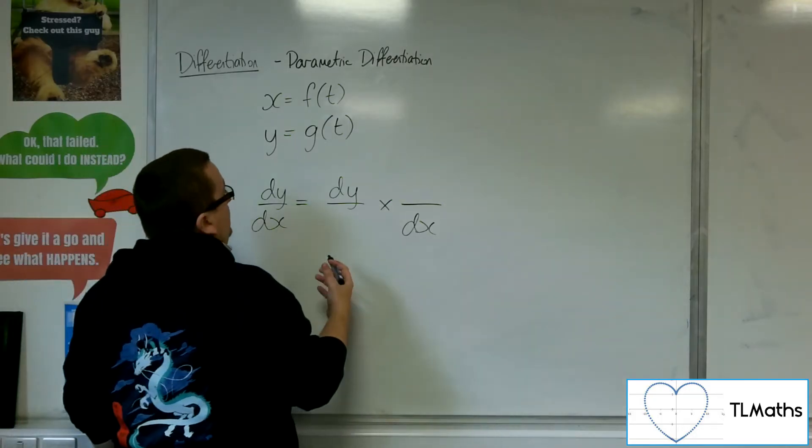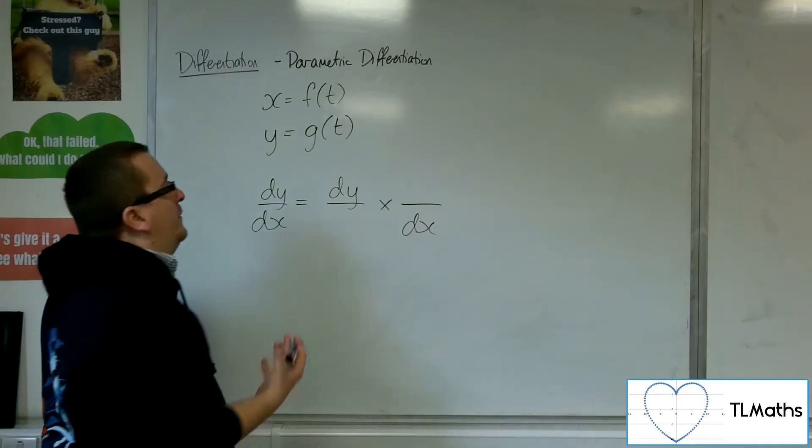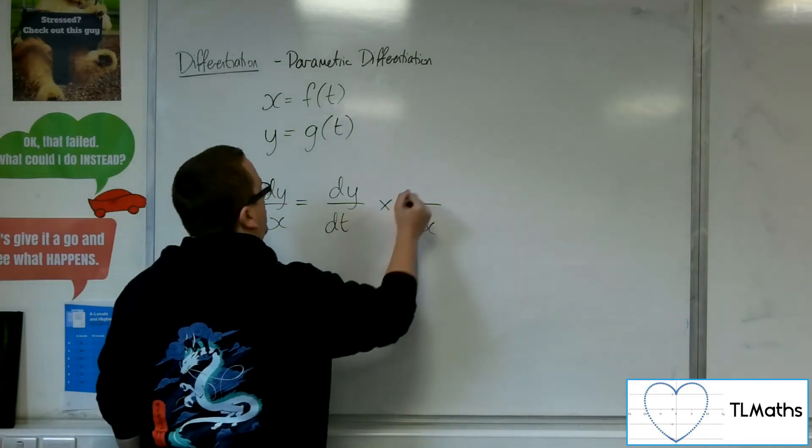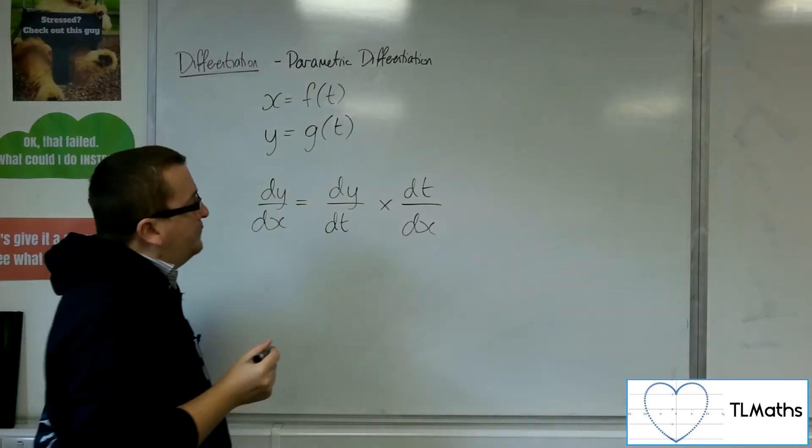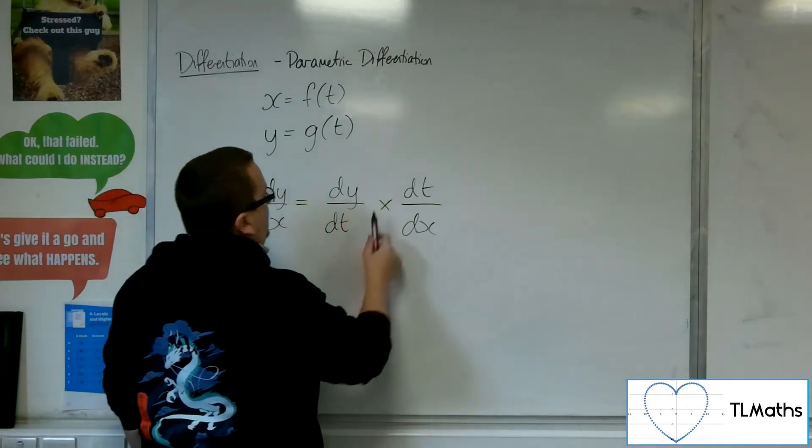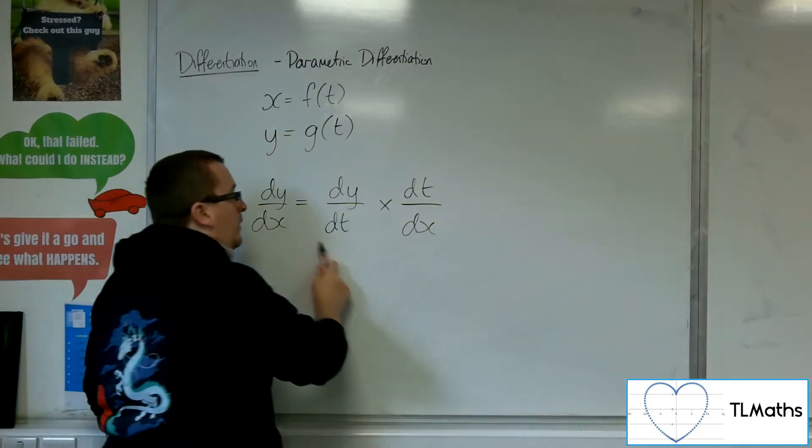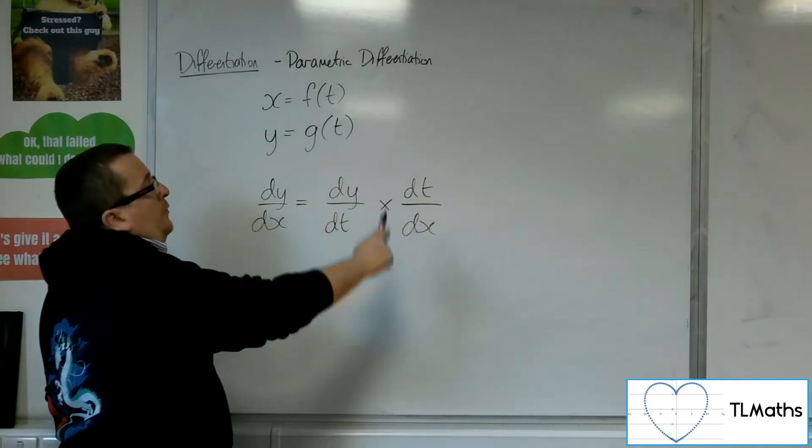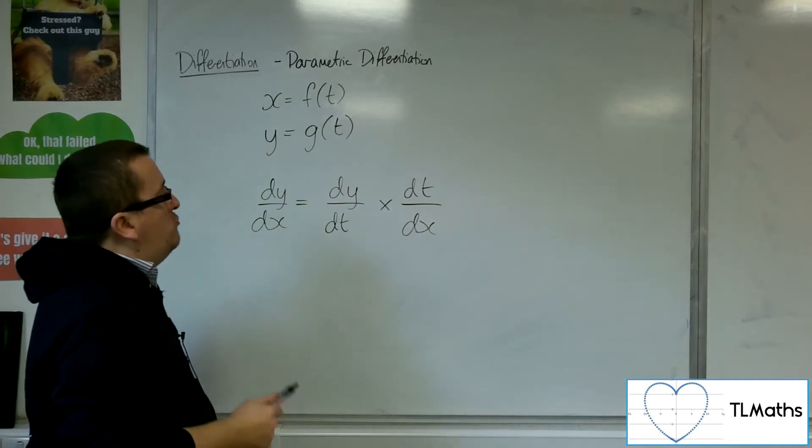And in this case, seeing as the only other variable that I have is the t, could I somehow write it like that? So dy by dt times dt by dx. And this is how we use parametric differentiation. We actually use the chain rule to do it.